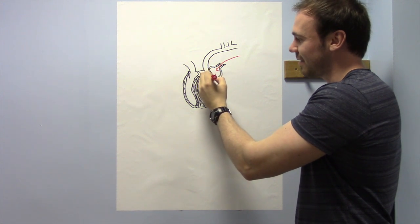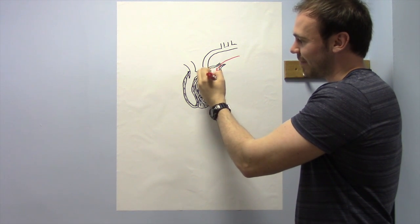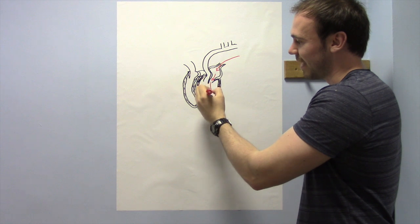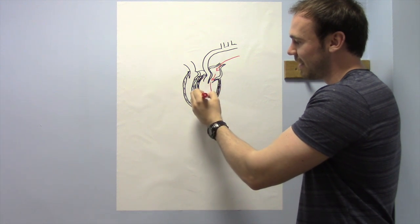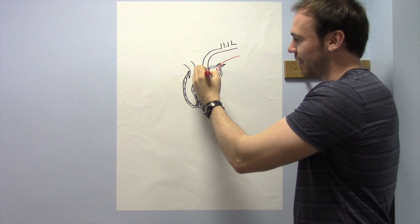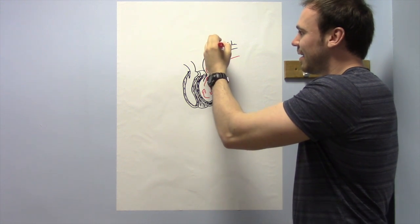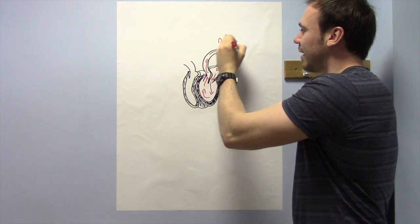Into the left atrium, which is the top one. It then makes its way into the left ventricle and gets pumped up through the aorta to the rest of the body.